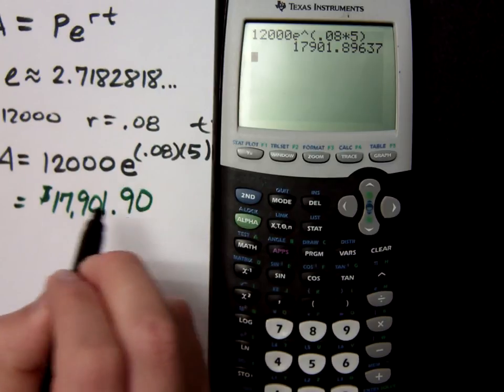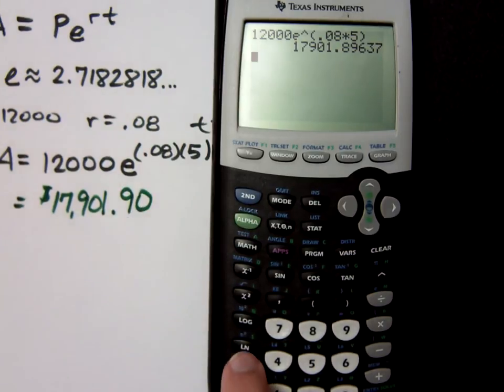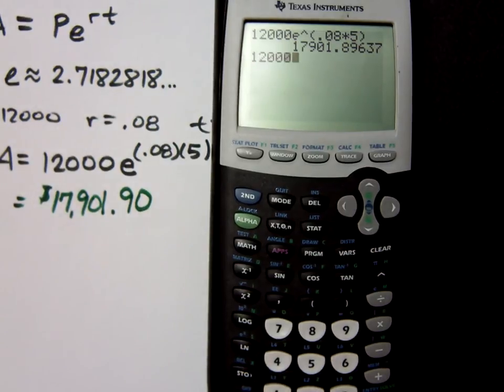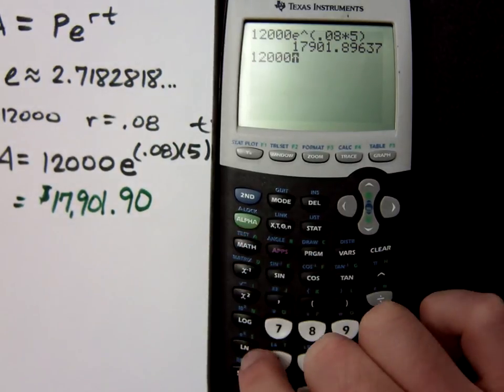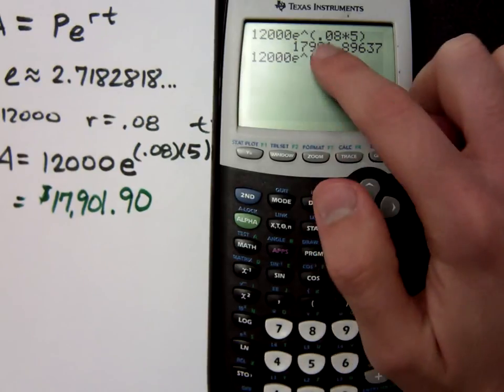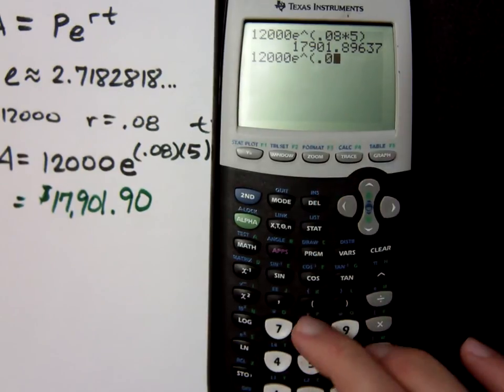So, here I have $17,901.90. Did you say ln? Yeah, the one next to the floor. Oh, I think it stands for logarithm naturalis, which is natural logarithm. So, I could have done 12,000, second, natural log, and it brings up e, caret, and parentheses, and just do the same thing you just had.